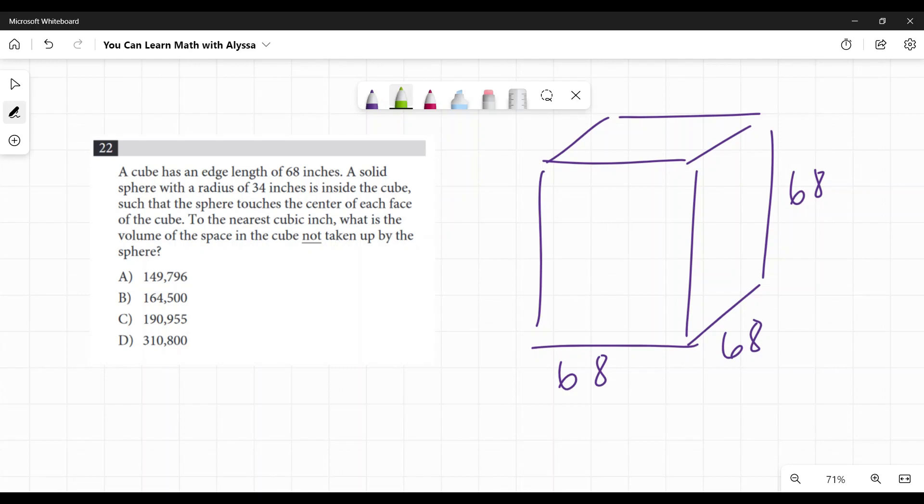A solid sphere with a radius of 34 inches is inside the cube such that the sphere touches the center of each face of the cube. So there's a sphere inside here with a radius of 34 inches, and they're both in inches—68 inches, 34 inches.